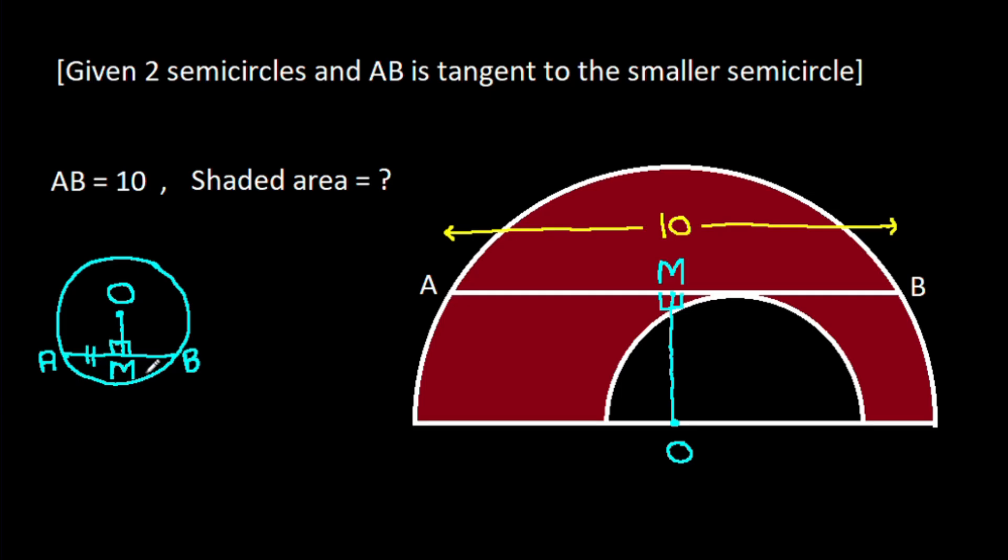Then AM it will be equal to BM. So here AM will be equal to BM, that will be AB over 2, and AB is 10 over 2, that will be 5. So AM is 5 and BM is 5.